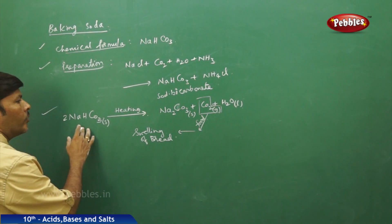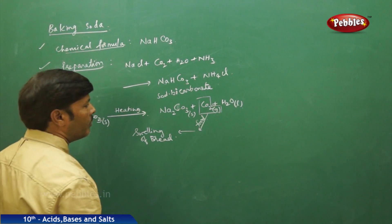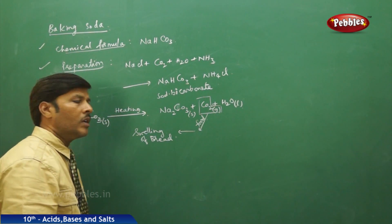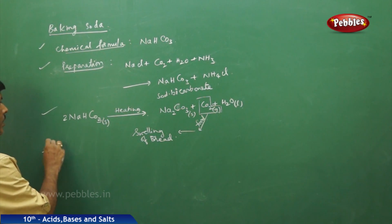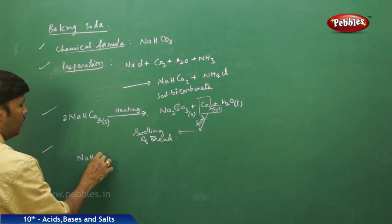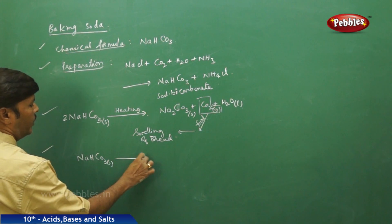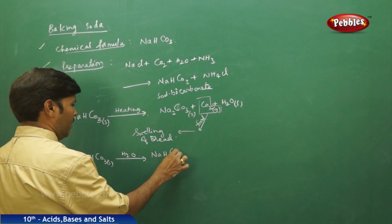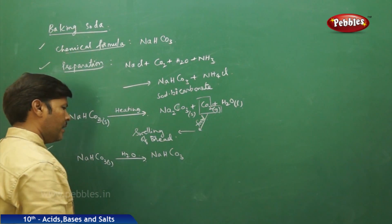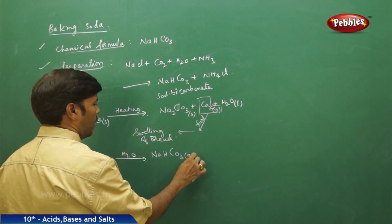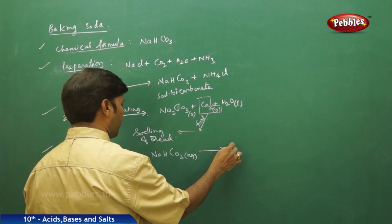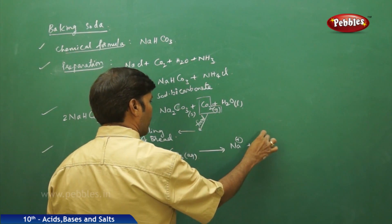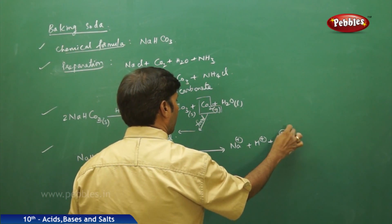This is one of the important reactions to keep in mind for the chemical property of baking soda. When sodium bicarbonate solid is put in water, it is soluble and forms NaHCO₃ (aqueous), giving three different types of ions: one Na⁺ ion, one H⁺ ion, and one carbonate ion.